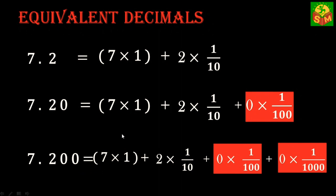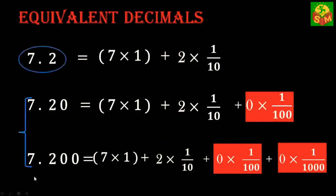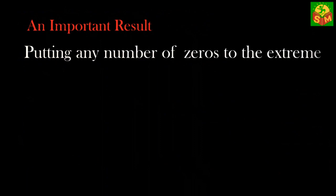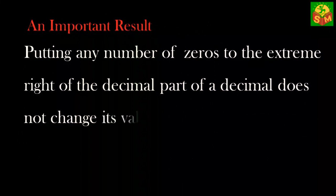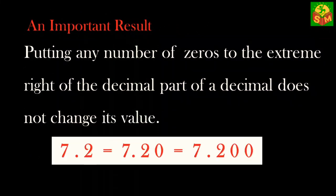Now we can surely conclude that 7.20 and 7.200 have same numerical value as 7.2. It means placing any number of zeros to the extreme right of the decimal part of a decimal does not change the value of the decimal. Using this fact, we can convert a set of unlike decimals to like decimals.